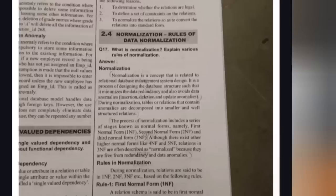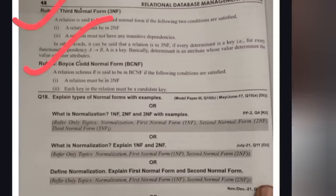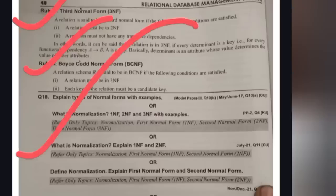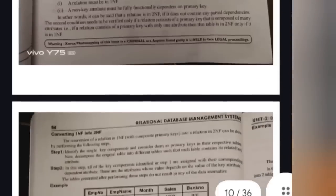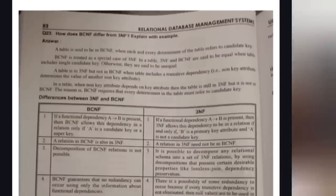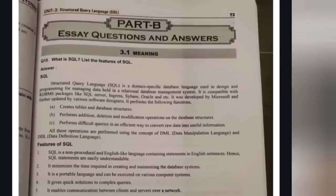Now we will discuss unit number two: normalization. I have already uploaded a video on normalization in our channel, so try to watch that video. Normalization means storing data using normal forms in a standardized format. We have 1NF, 2NF, 3NF, and BCNF. Watch the video to understand the concept better. Any question — the same answer applies. If you learn from material only, you will not understand, so watch the video to easily get 10 marks.